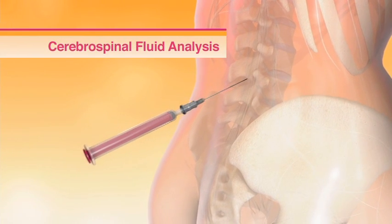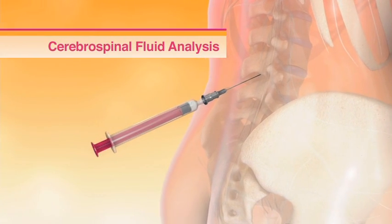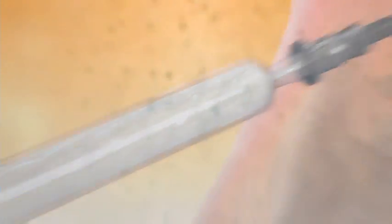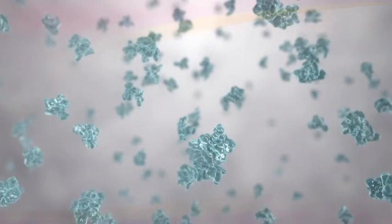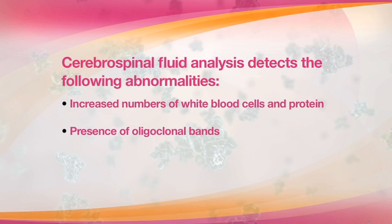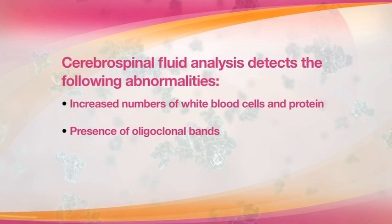Cerebrospinal fluid analysis from a spinal tap, or lumbar puncture, is a procedure that removes spinal fluid from the spinal canal. Analysis of this fluid detects cellular and chemical abnormalities associated with MS, such as increased numbers of white blood cells and protein. Physicians can also identify the presence of oligoclonal bands, which are characteristic of MS.